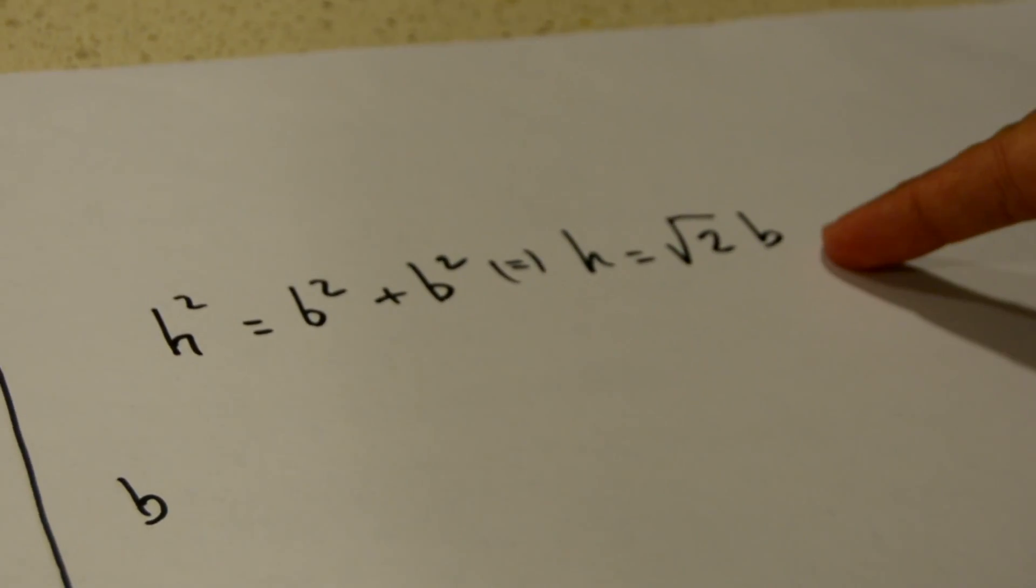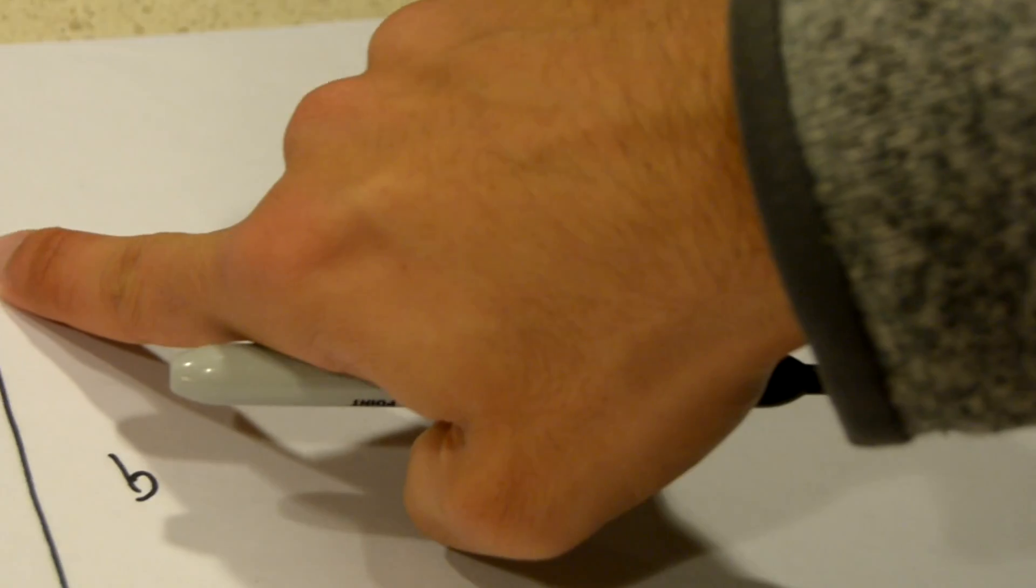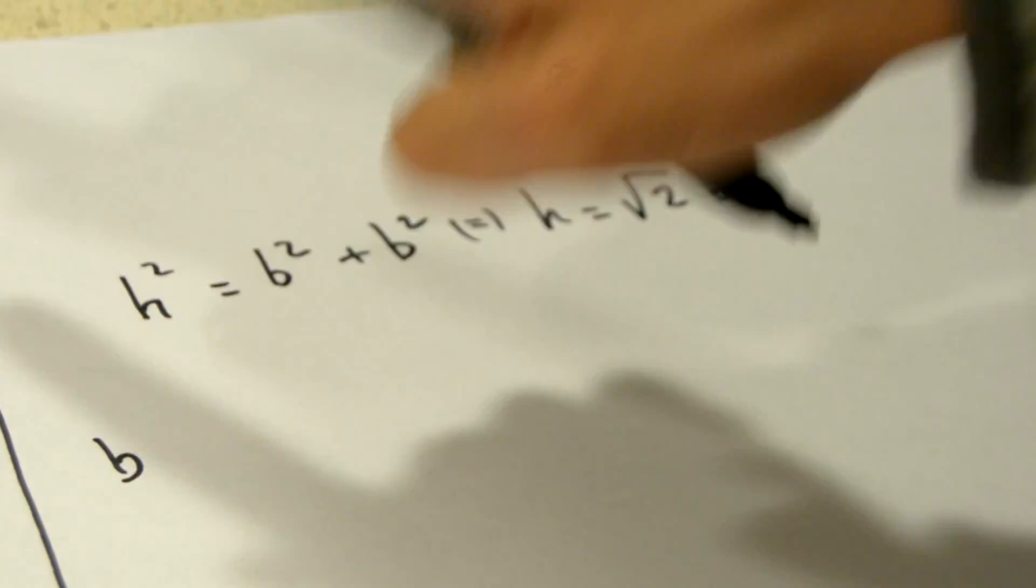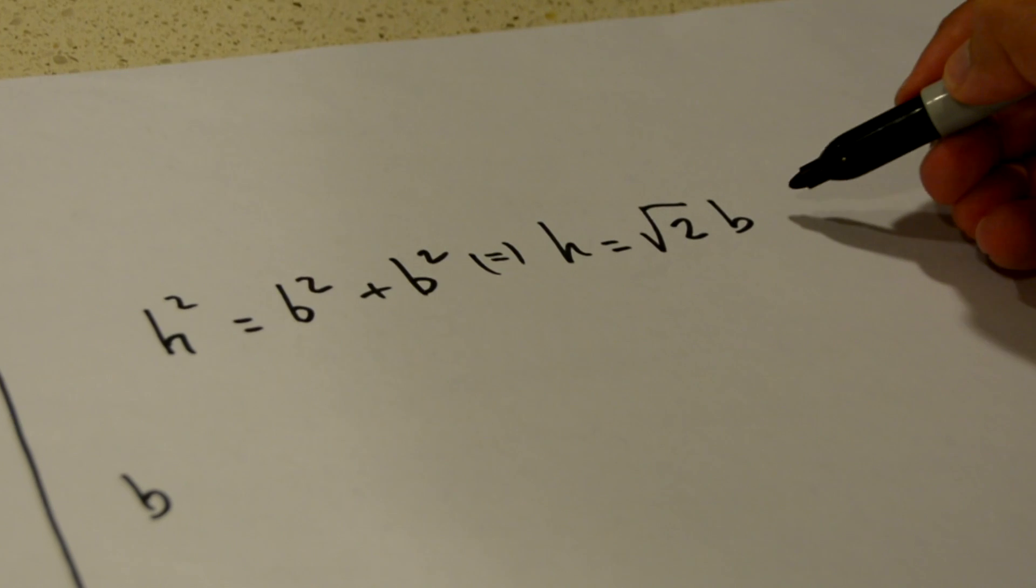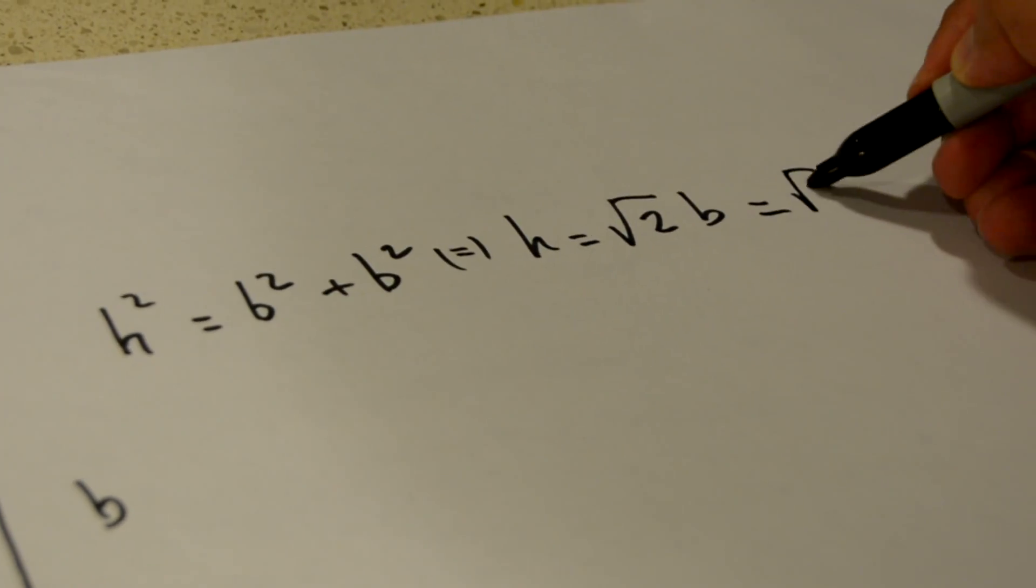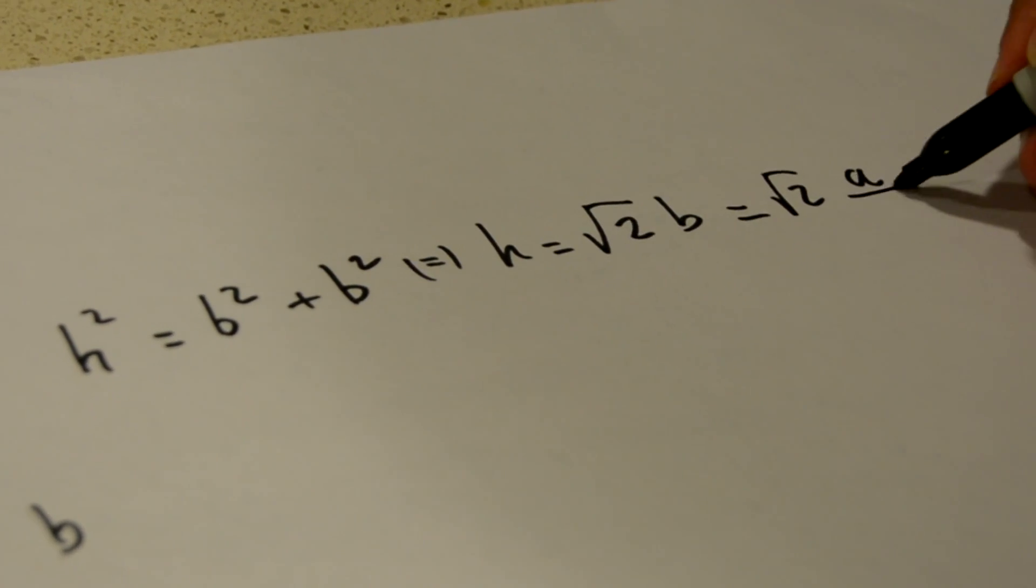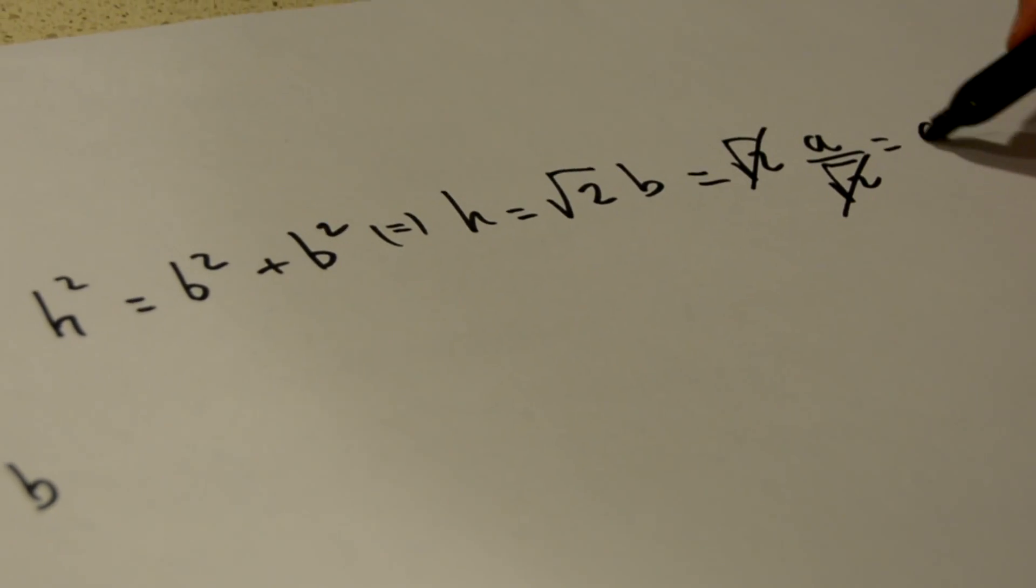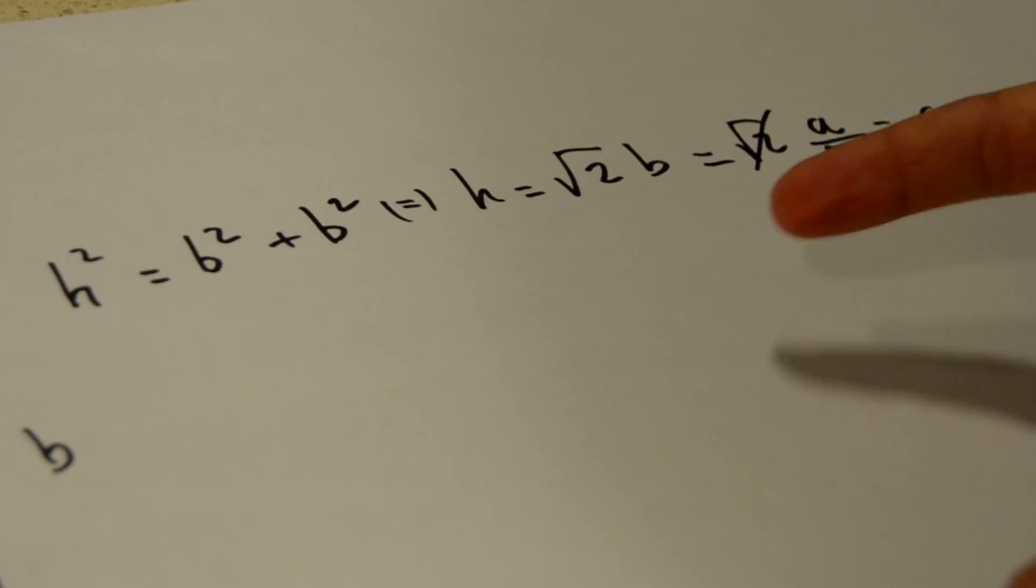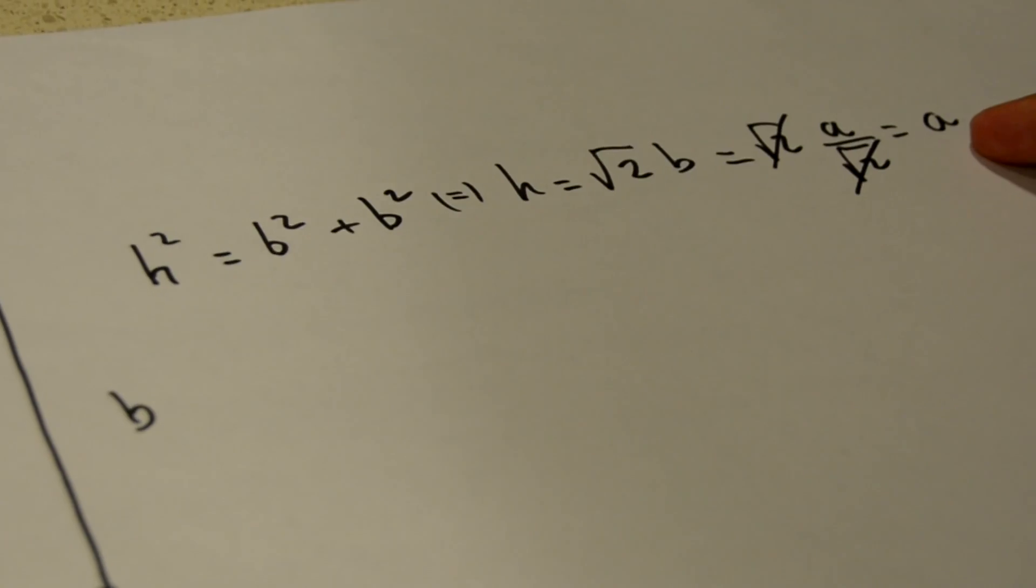and if we use our initial assumption, we see that b equals a over the square root of 2, so the length of the hypotenuse h is actually equal to a.